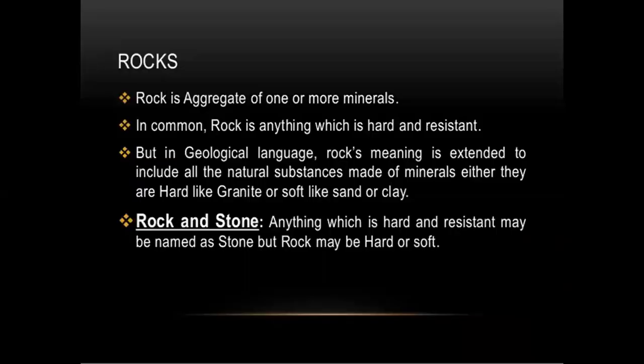First, we should talk about what do you mean by rock. Rock is an aggregate of one or more minerals, that is, a combination of one or more minerals. Example: granite, which contains quartz and feldspar. In common usage, rock is anything which is hard and resistant. But in geological language, the meaning is extended to include all natural substances made of minerals, either they are hard like granite or soft like sand or clay.